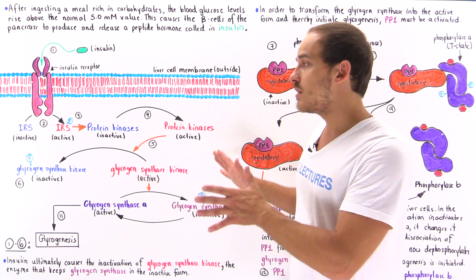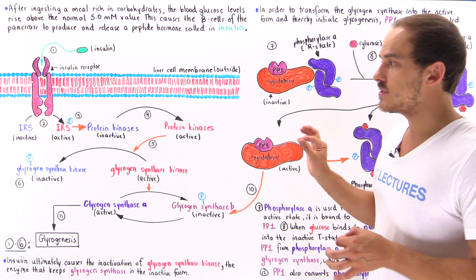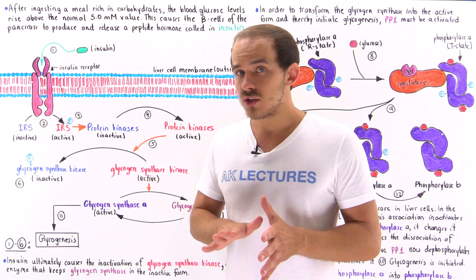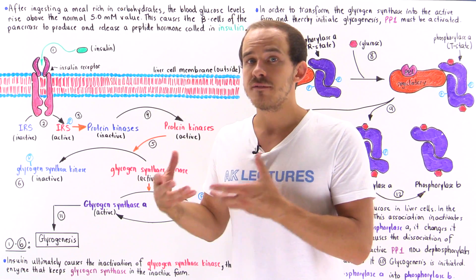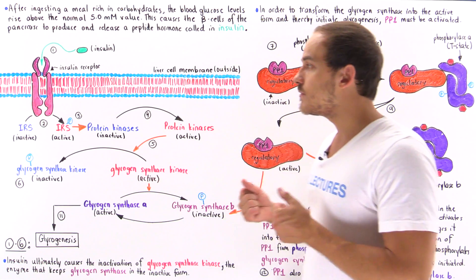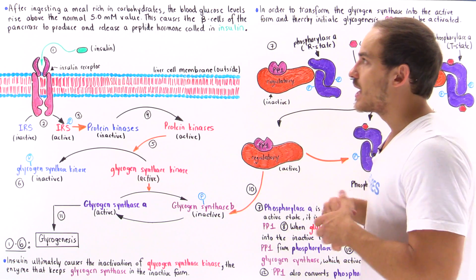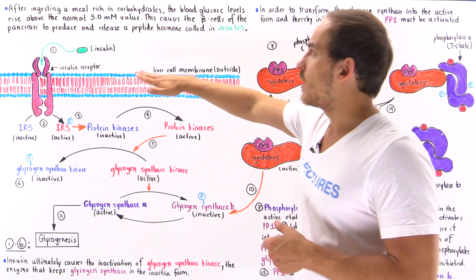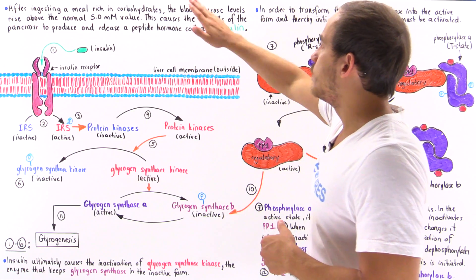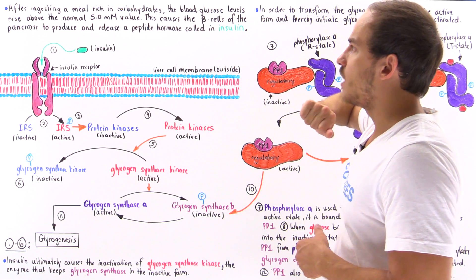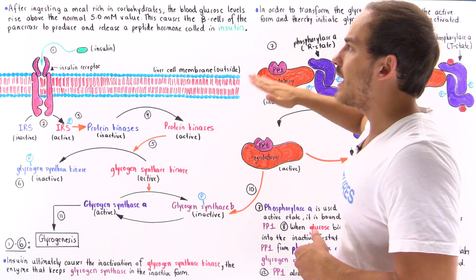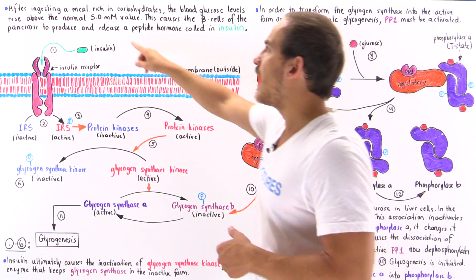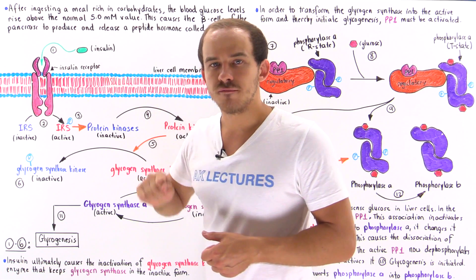I'd like to focus on how insulin and how glucose molecules actually affect liver cells. So after ingesting a meal rich in carbohydrates, the blood glucose levels in our body rise above the normal 5 millimolar value.